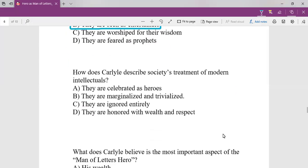How does Carlyle describe society's treatment of modern intellectuals like Dr. Samuel Johnson, Robert Burns and Rousseau? According to the modern society, these people are marginalized and trivialized. This is the opinion of Carlyle.